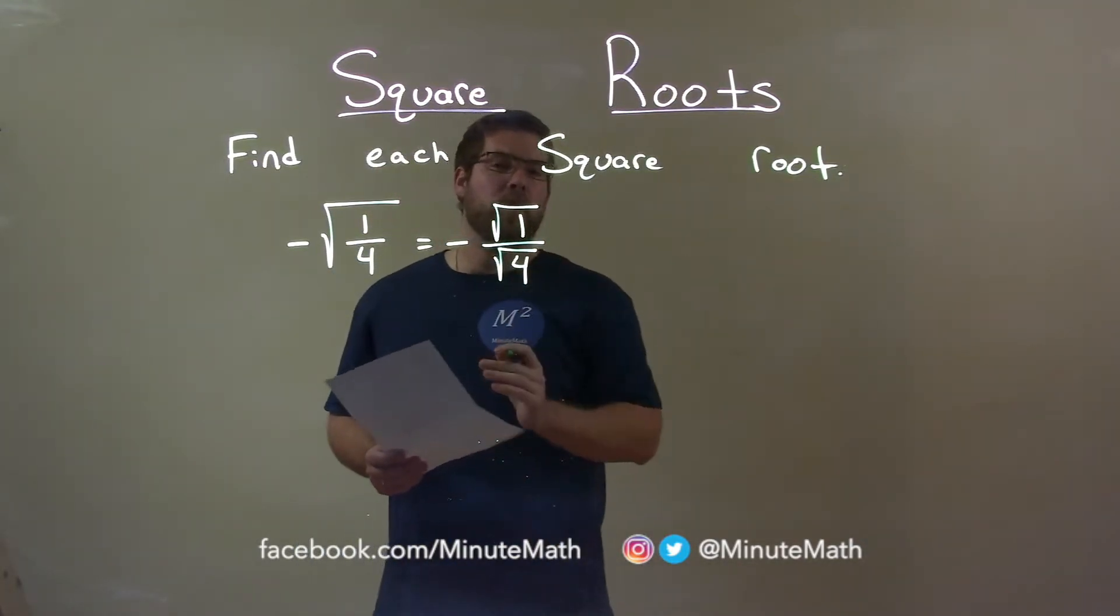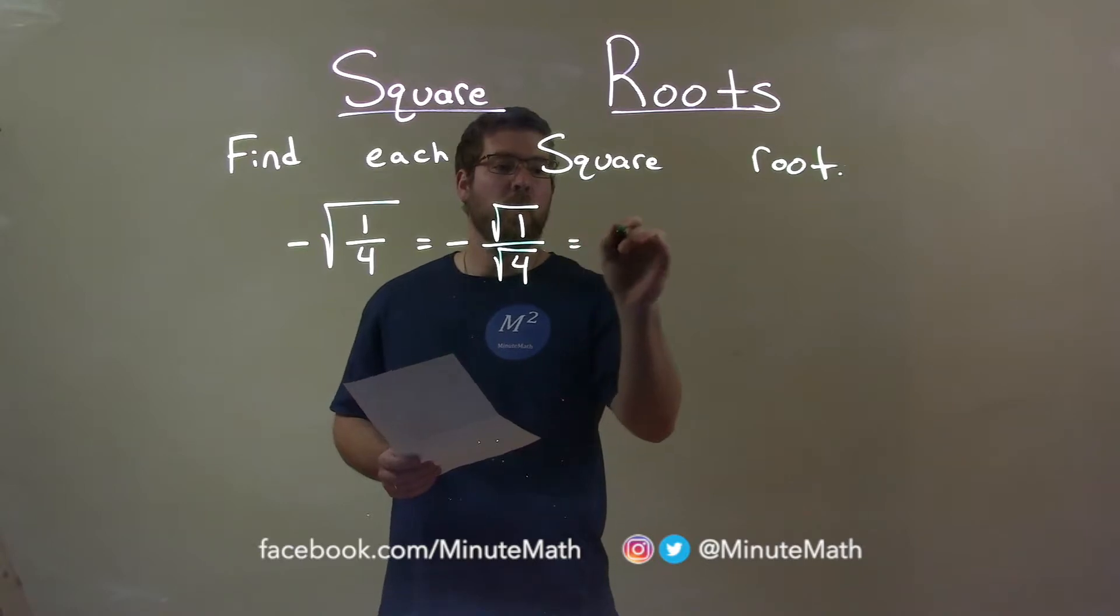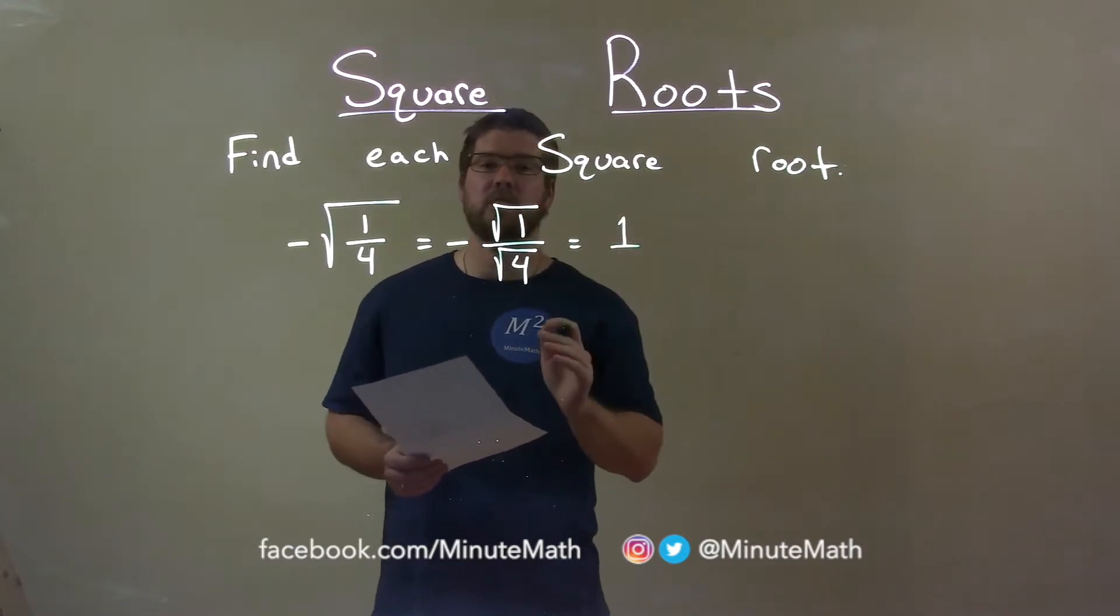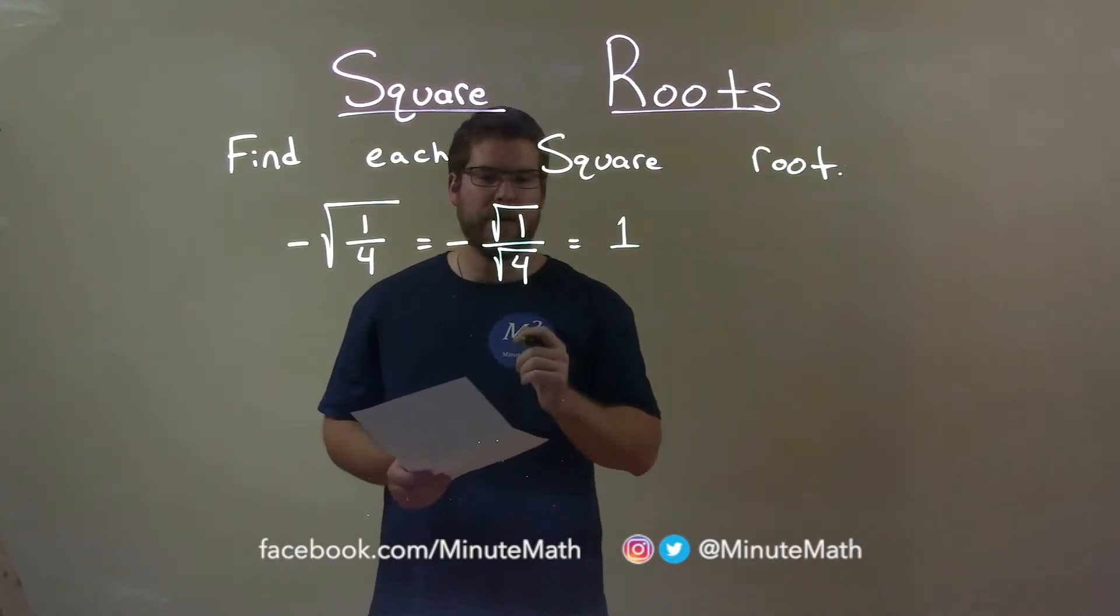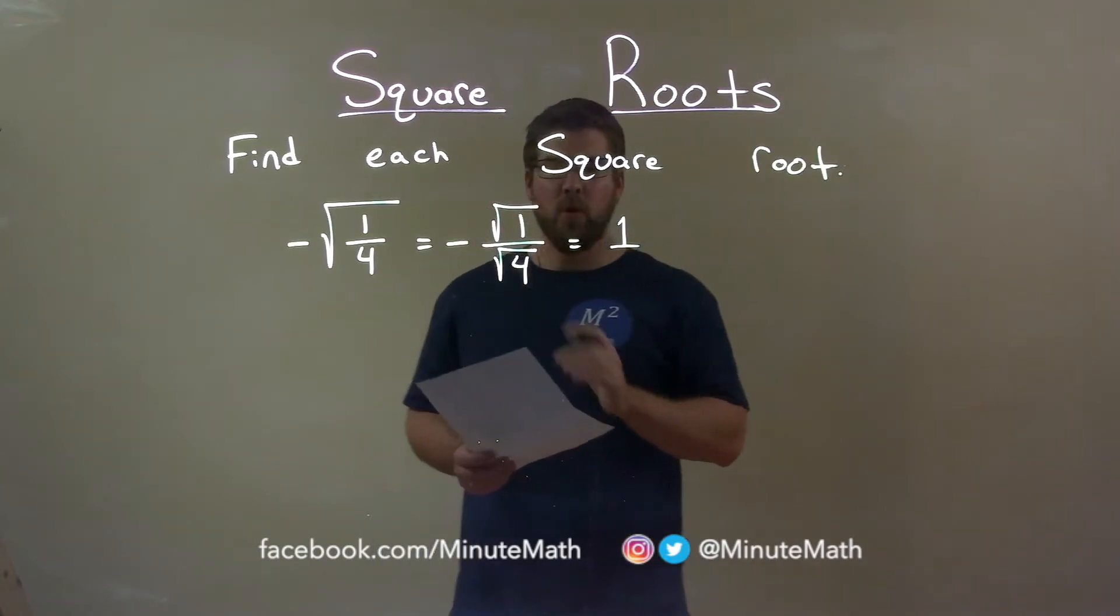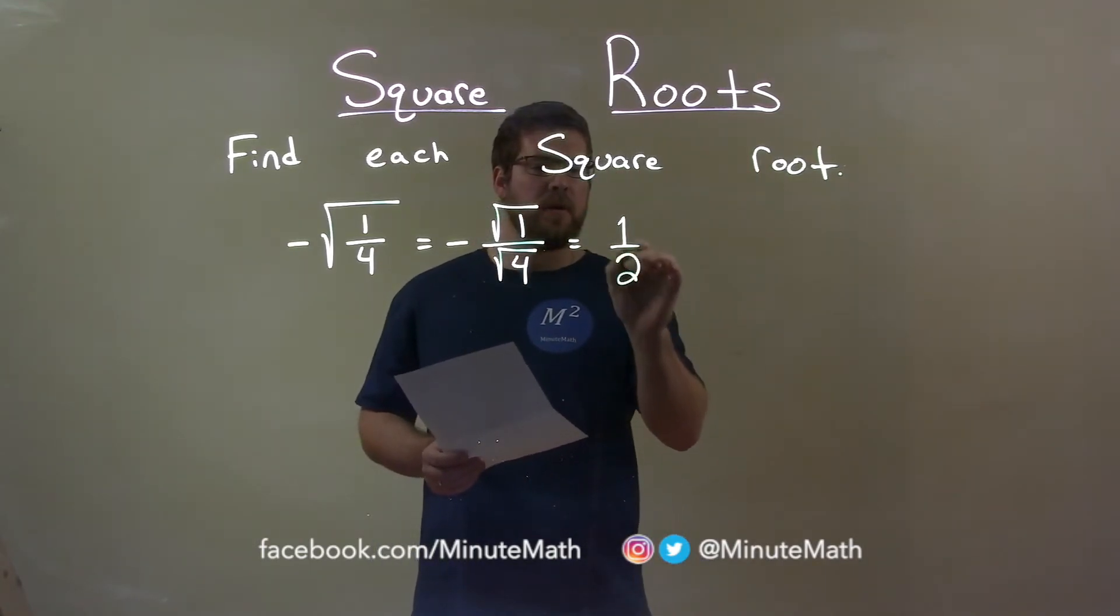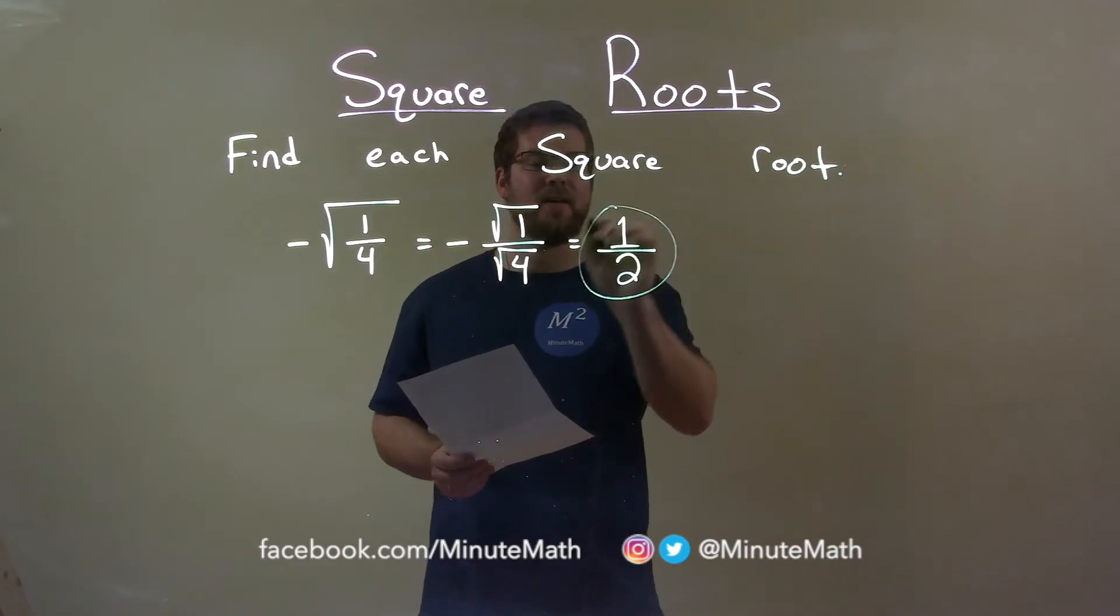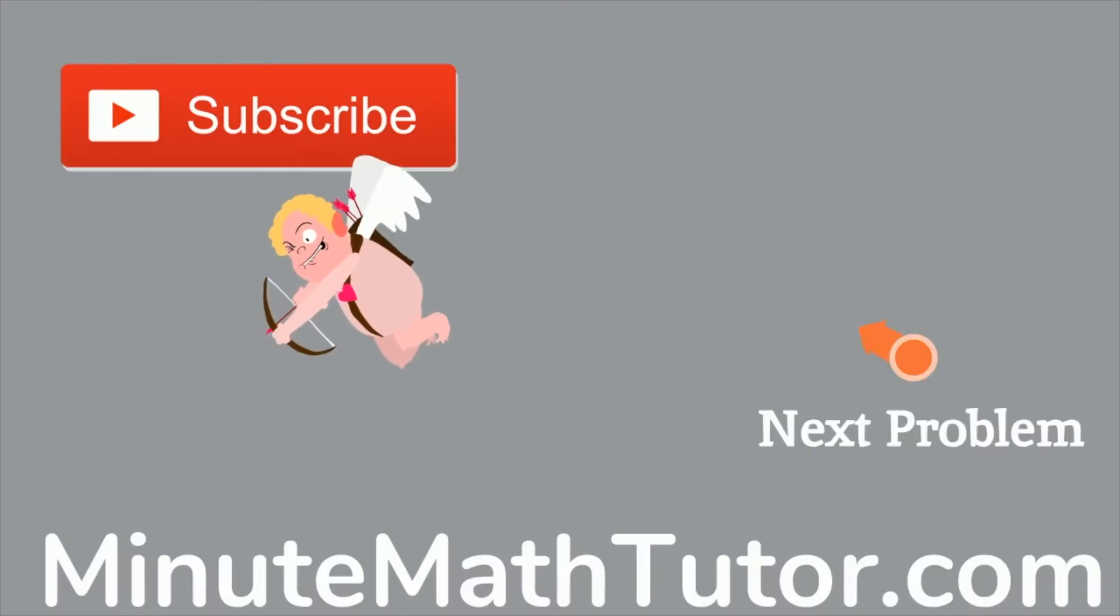Square root of one is just one, because one times itself is one. Square root of four is two, and so our final answer is negative one-half.